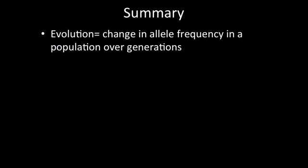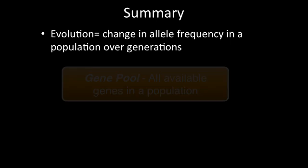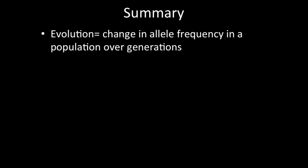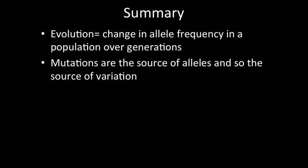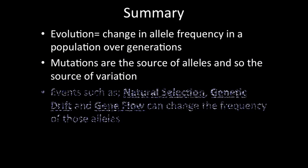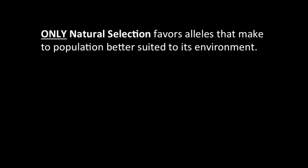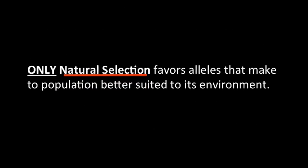To summarize, we define evolution as a change in allele frequency, or change in the gene pool. A gene pool is the collection of all the available genes in a population over generations. Mutations are the source of alleles, and events such as natural selection, genetic drift, and gene flow can change the frequency of those alleles in a population. Of these, only natural selection favors alleles or variations that make the population better suited to its environment.